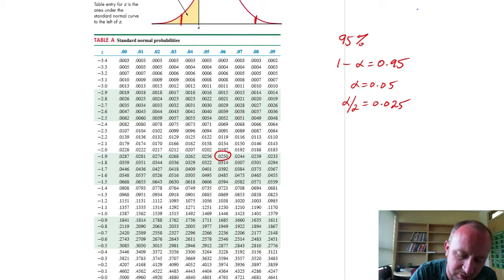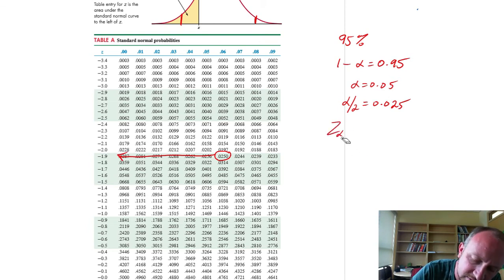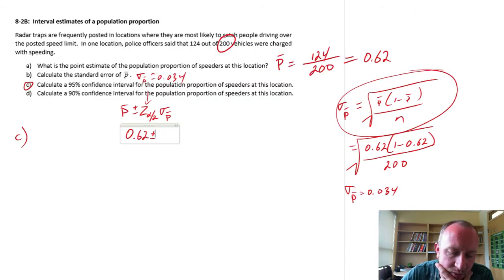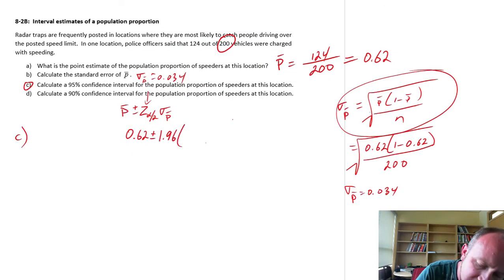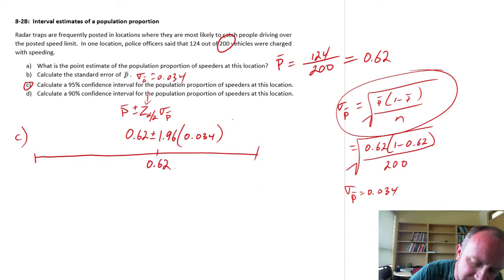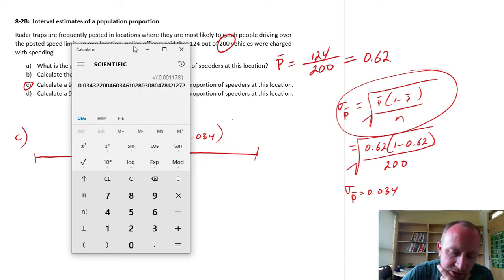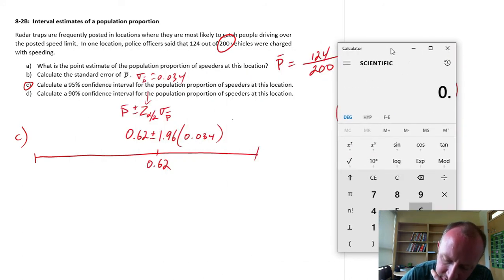We look through this table, and here I find 0.025. You've probably seen this one before. It won't be long before you have it memorized. So z alpha by 2, z for 0.025 is 1.96. So our critical value here is 1.96 times our standard error 0.034. Our interval has 0.62 in the middle plus the margin of error, which is 1.96 times 0.034.